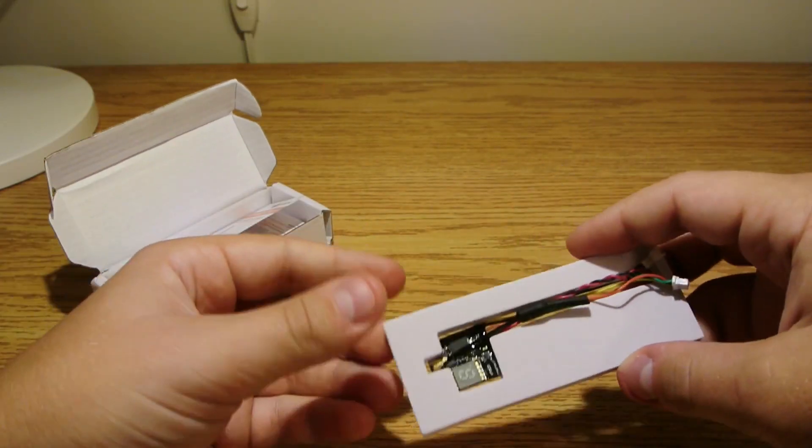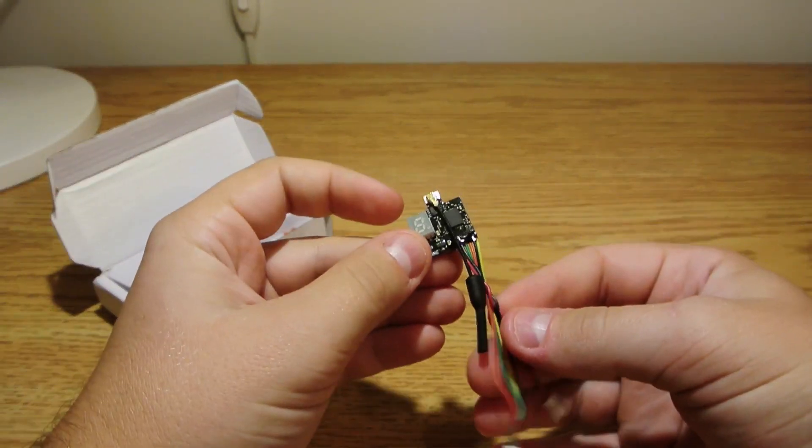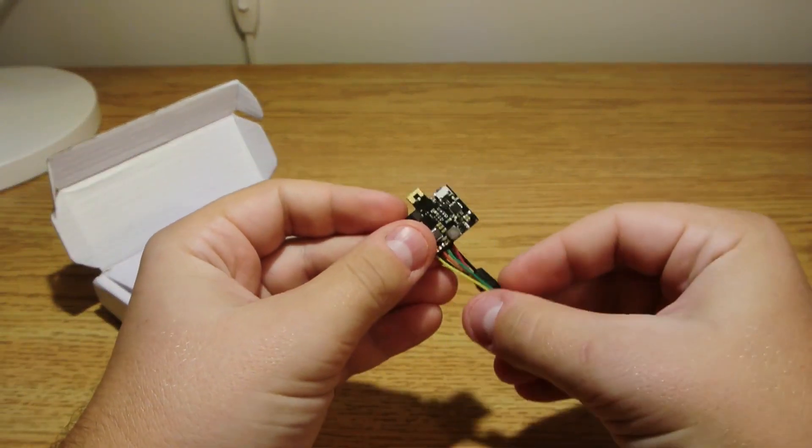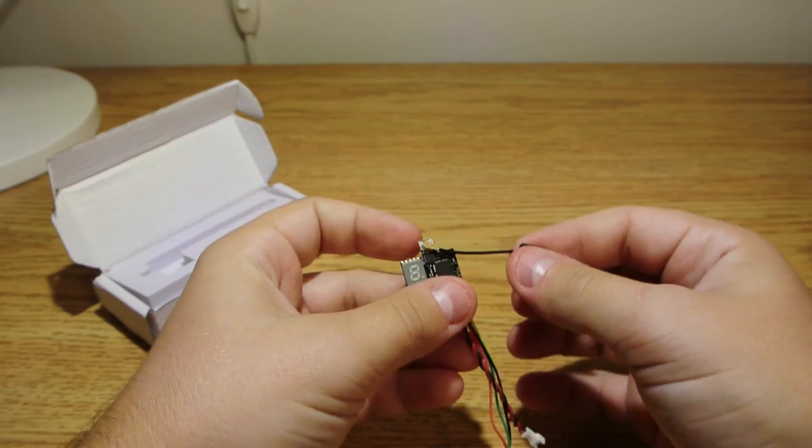Looking at the video transmitter, it maintains the size and weight of Eosheen's other microtransmitters, but it is the first to incorporate smart audio. This means that all of the video transmitter settings can be changed via the Betaflight OSD with some minor setup.